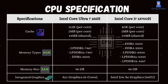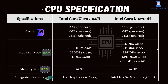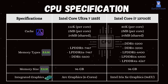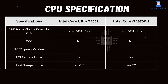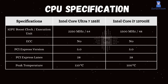Both processors come with integrated graphics. The Core Ultra 7 155H uses Intel Arc graphics with 8 cores, while the Intel Core i7-13700H uses Intel Iris Xe graphics. Although Arc graphics offers a higher boost frequency, it is primarily suitable for light gaming and content creation tasks. The Intel i7-13700H's graphics also provide solid performance for everyday tasks, but neither graphics option is designed for high-end gaming or professional graphic work.